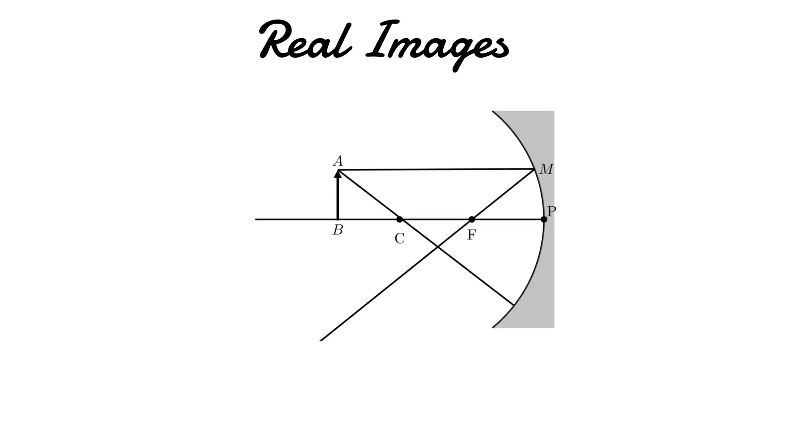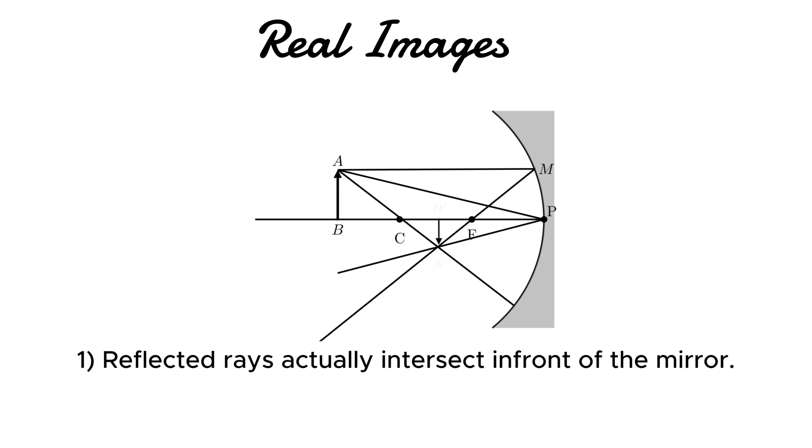Now let's discuss real images. Real images are formed when actual light rays intersect in front of the mirror at a specific point, resulting in a clear image that can be projected onto a screen.